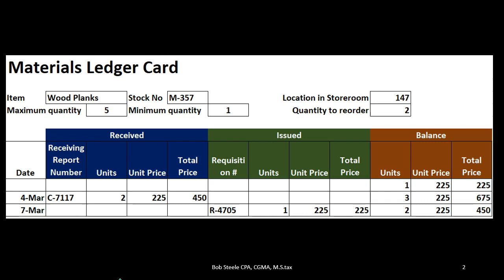This is going to be an example of a materials ledger card, and you can note that it's going to look very similar to tracking inventory — we're basically tracking the inventory of materials. If you work with a merchandising company that purchases and sells inventory, we'll have a similar kind of tracking system. In this case we're using it for one component of inventory — for example if we make guitars, the major component might be wood, and we'd have to track that component similarly to how a merchandising company tracks full units of inventory.